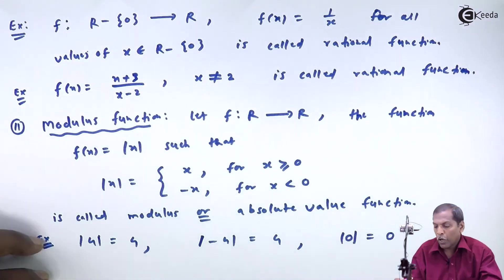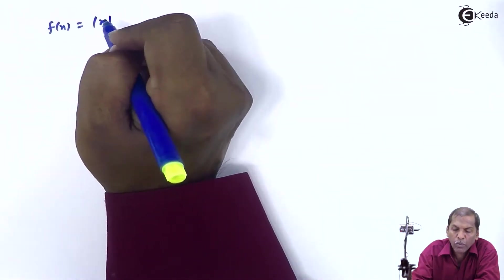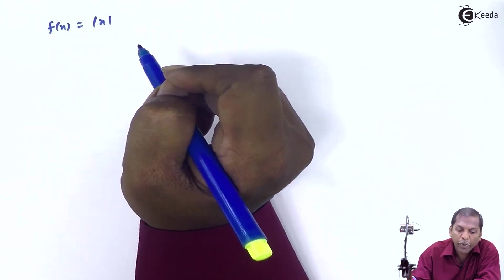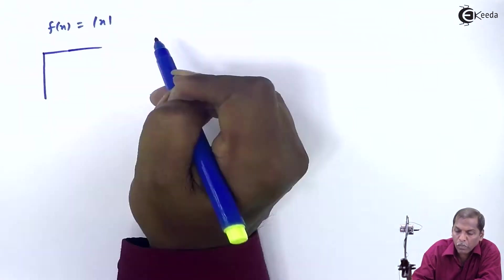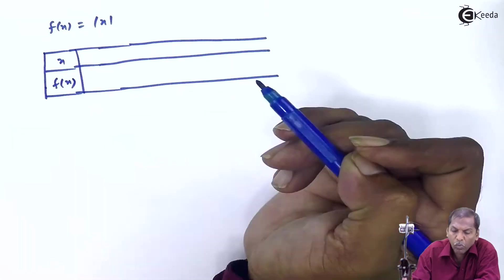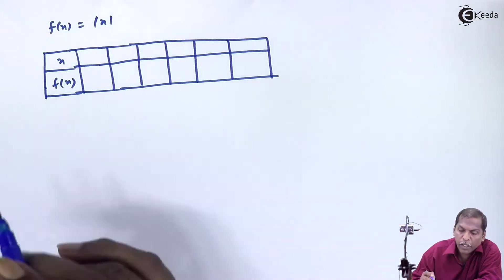Now, for the modulus function graph, f equals |x|, first of all we prepare the table. We consider x values.